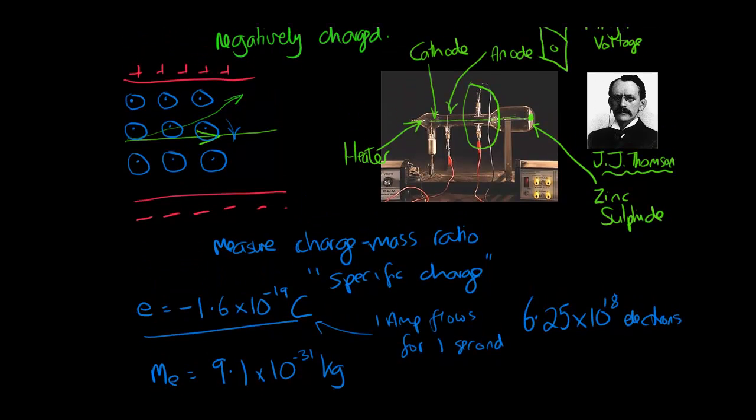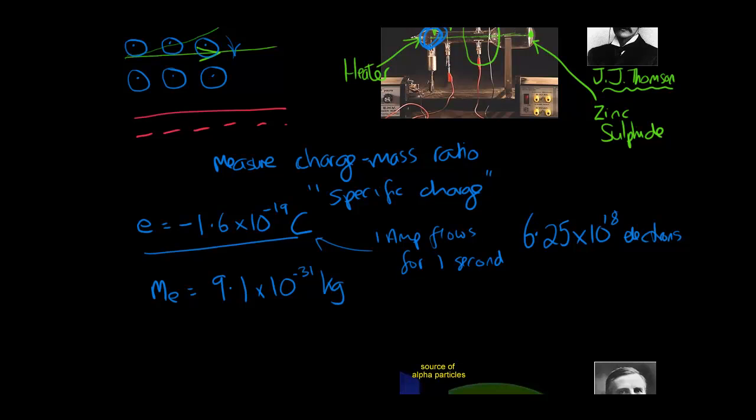This led JJ Thompson to propose a plum pudding model of an atom because what he said was that the electrons are getting ripped off the cathode here by this strong positive anode, being accelerated through the hole and then hitting the screen. And he said the cathode must be full of electrons. The atoms must be full of electrons. And so he proposed a plum pudding model which looked a bit like this. You've got this positive jelly or cloud of jelly, and then the electrons are in there like plums, hence plum pudding. And the number of electrons balances the positive jelly.